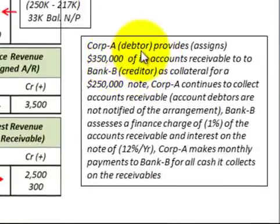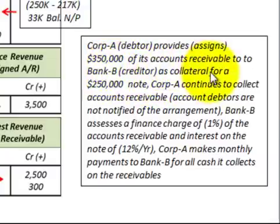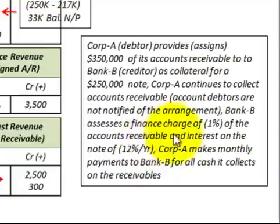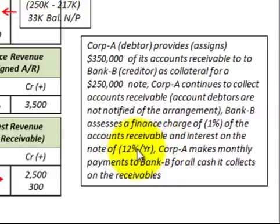In our example, Corporation A, the debtor, assigns $350,000 of its accounts receivable to Bank B, the creditor, as collateral for a $250,000 note. Corporation A continues to collect the accounts receivable and the account debtors aren't notified of this arrangement. Bank B assesses a finance charge of 1% of the accounts receivable and interest on the note of 12% per year, which Corporation A must pay to Bank B.